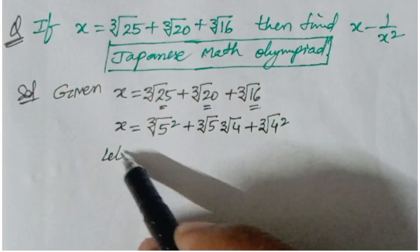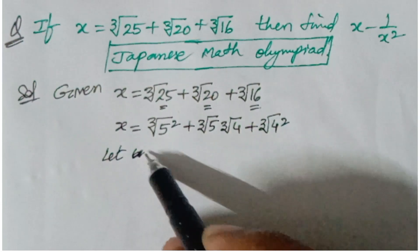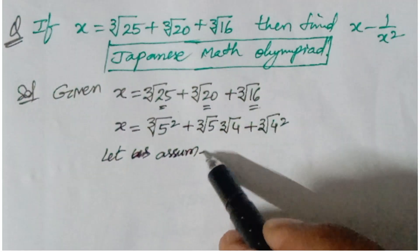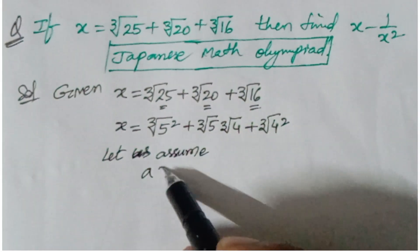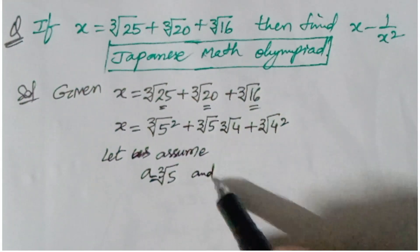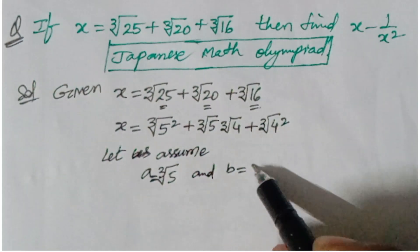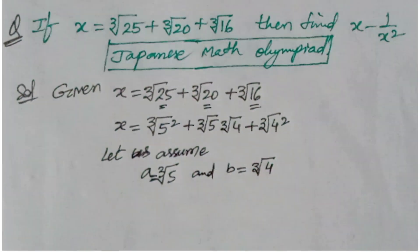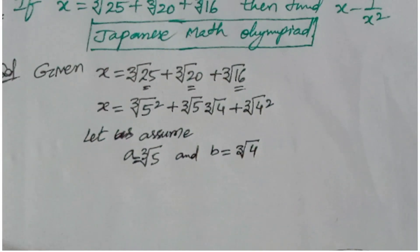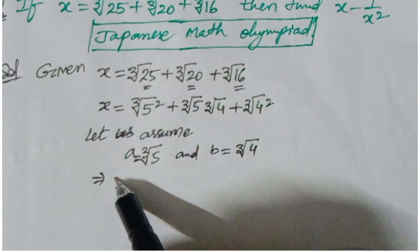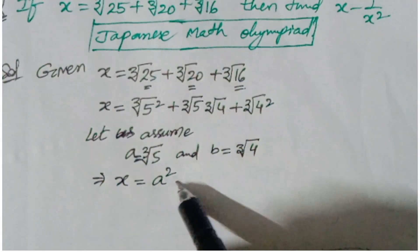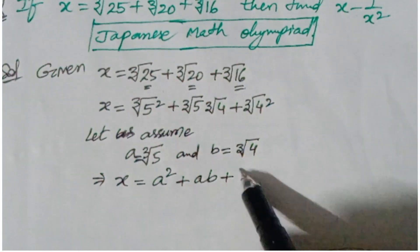Let us assume a is equal to cube root of 5, and b is equal to cube root of 4. Then the equation becomes x is equal to a squared plus a·b plus b squared.